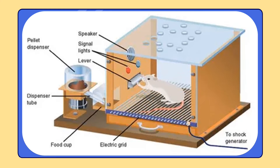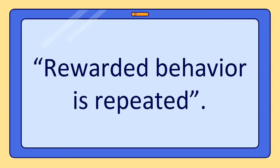In day-to-day life, much learning takes place in animals as well as in human beings by this method. The reinforcement serves as the motivating factor — it makes the organism repeat its action, just like a child who was praised after cleaning up his toys gets a lollipop as a prize. On the basis of these experiments, Skinner made his famous statement: rewarded behavior is repeated.